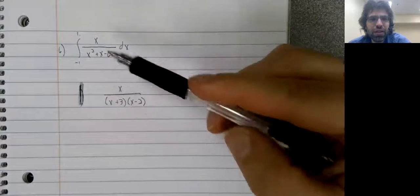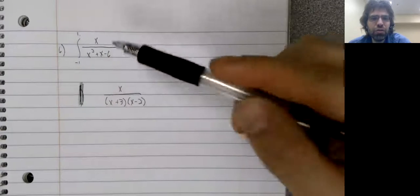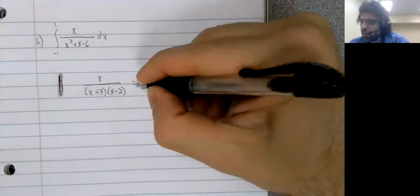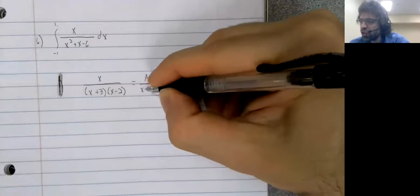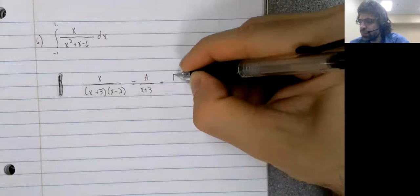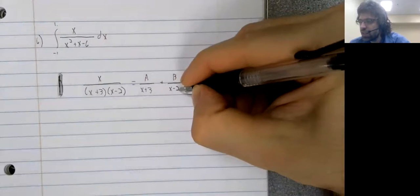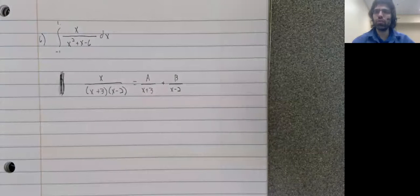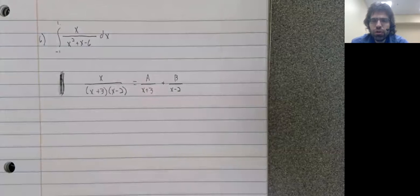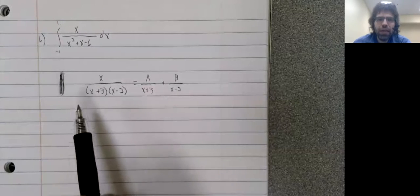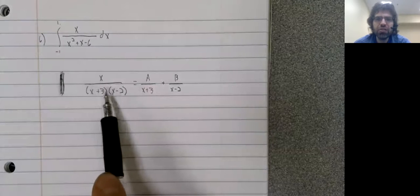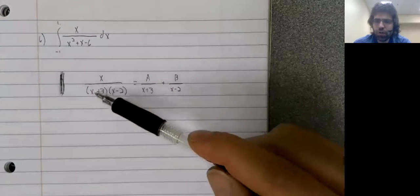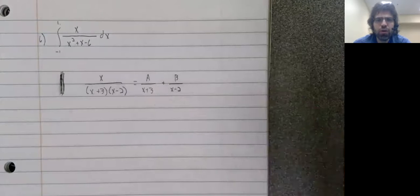This factors easily. 3x, negative 2x gives x, 3 times negative 2, negative 6, x times x, x squared. And what the partial fraction decomposition says is that we can write this as the sum of simpler rational functions. And the exact way you do that varies, but we have focused on the case where we have distinct linear terms.